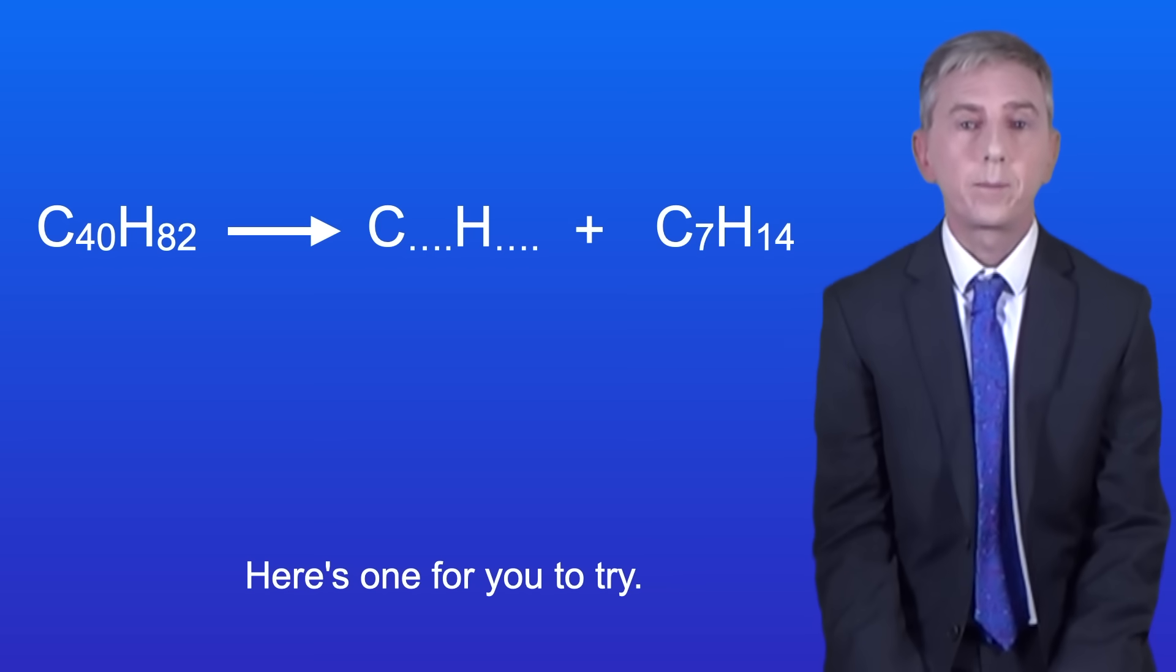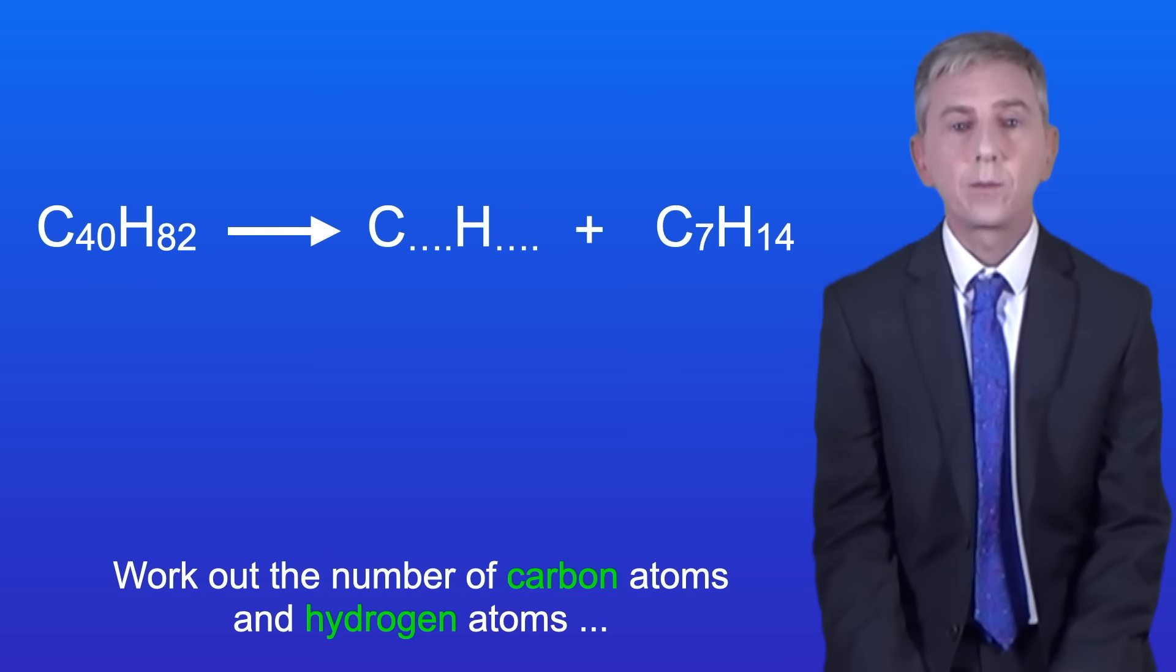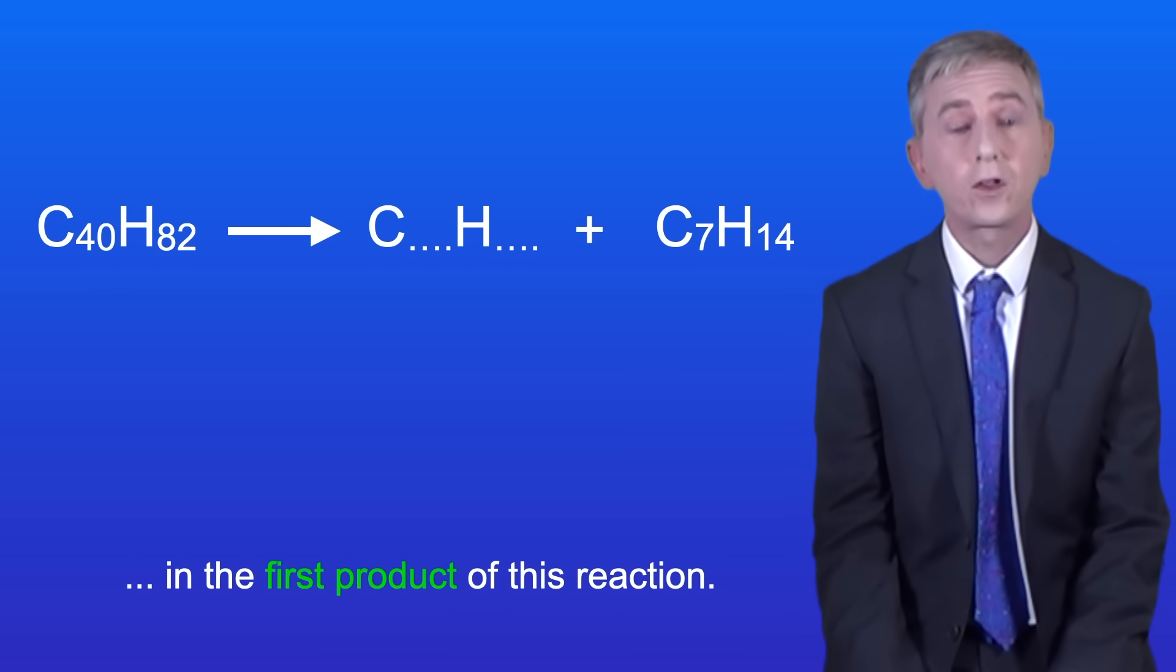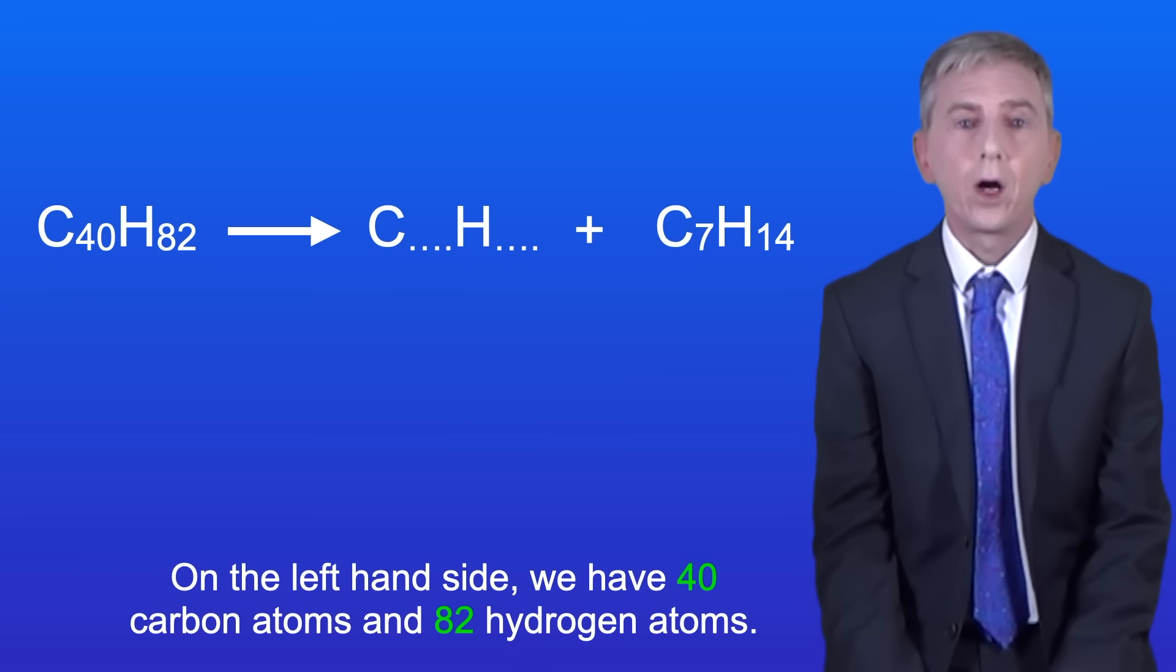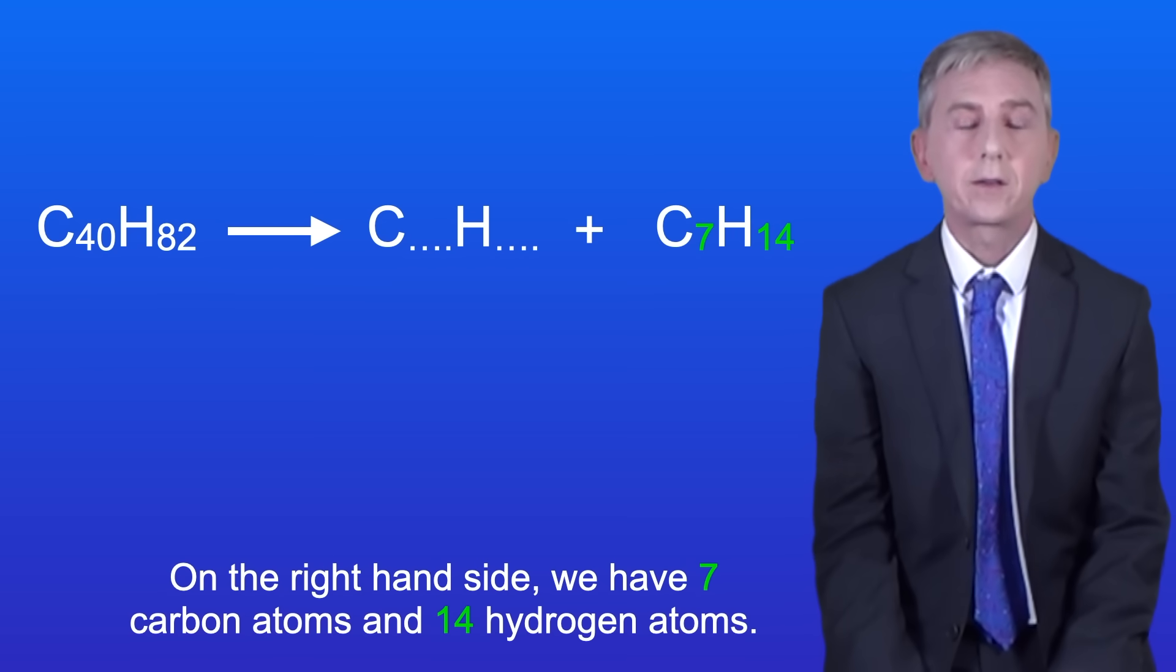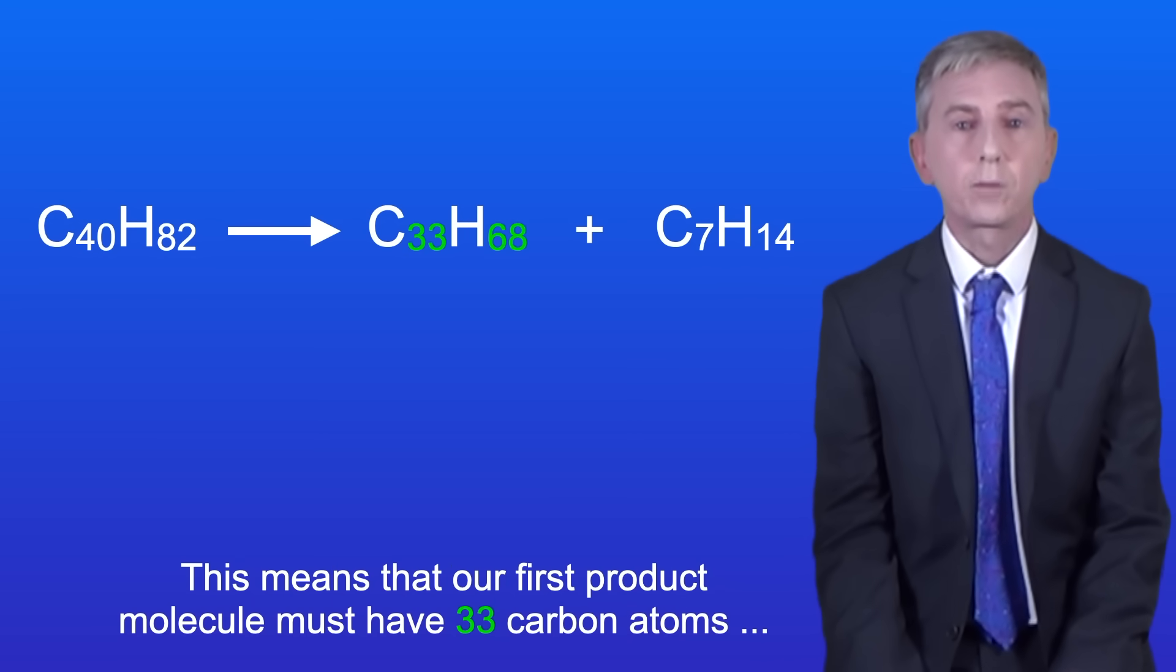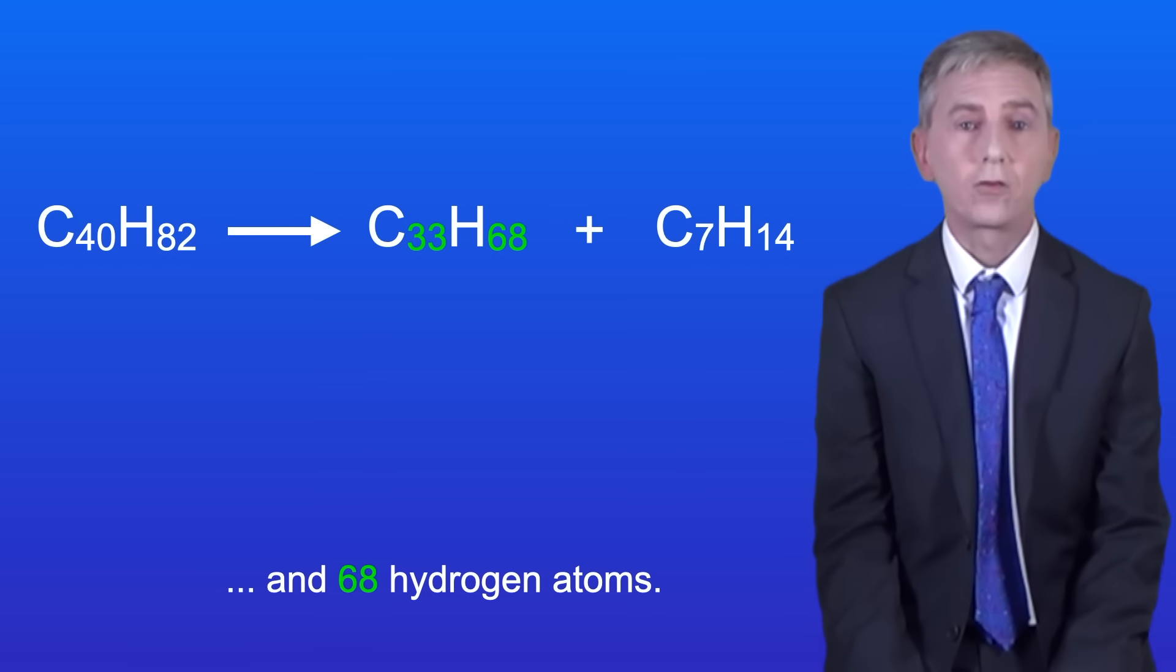Here's one for you to try. Work out the number of carbon atoms and hydrogen atoms in the first product of this reaction. So pause the video now and try this yourself. Okay on the left hand side we've got 40 carbon atoms and 82 hydrogen atoms and on the right hand side we've got 7 carbon atoms and 14 hydrogen atoms. This means that our first product molecule must have 33 carbon atoms and 68 hydrogen atoms.